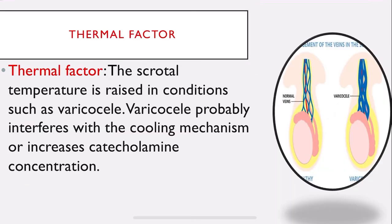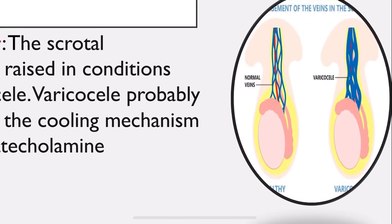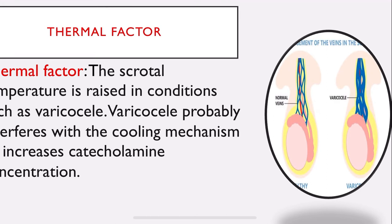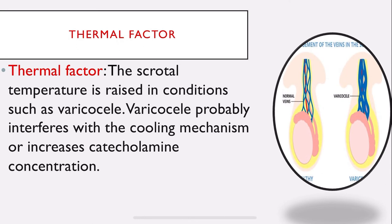The thermal factor: scrotal temperature is raised in conditions such as varicocele. In varicocele, there is an enlargement of the veins within the scrotum. The enlarged veins increase scrotal temperature, interfere with the cooling mechanism, and increase catecholamine concentration, leading to low sperm production and decreased sperm quality, resulting in infertility.